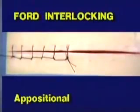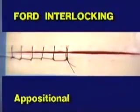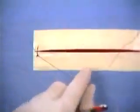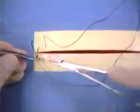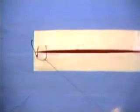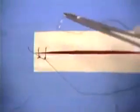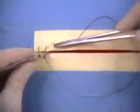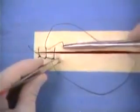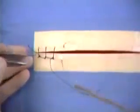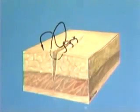The fourth pattern to be demonstrated is the forward interlocking pattern. This is an appositional suture pattern. The forward interlocking suture is a modification of the simple continuous suture. The beginning of the suture is as described for the simple continuous suture. The needle is advanced, a loop is formed, and the needle is passed perpendicularly through the tissues in the same direction. After the needle is passed from the tissues, it is drawn through the preformed loop and tightened. The pattern is repeated for the length of the incision.